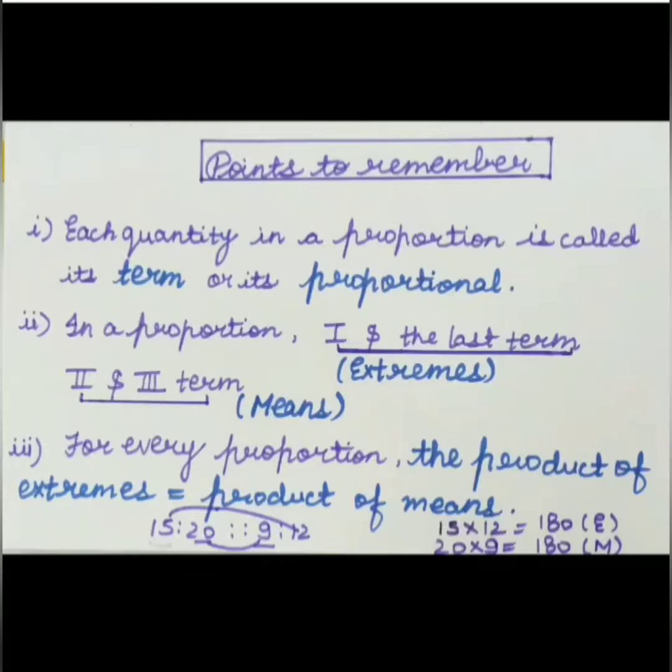Third point: for every proportion, the product of the extremes is equal to the product of the means. First one is given to us 15, second one 20, third one 9, and fourth one 12. 15:20 in proportion to 9:12.